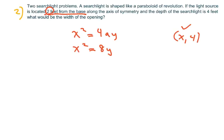So when you plug in 4, you get X squared equals 8 times 4. So X squared equals 32. And so X equals plus or minus 4 square root of 2.